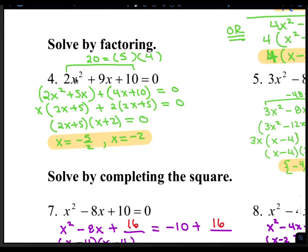Here's number 4. We're going to multiply A times C. We're solving by factoring. So 2 times 10 is 20. The two numbers that multiply to 20 but also add up to 9 is 5 and 4. So in the first group it'll be 2x squared plus 5x, and the second group would be 4x plus 10. Greatest common factor in the first group is x, leaving you with 2x plus 5. The greatest common factor in the second group is 2, leaving you with 2x plus 5. Then the final factoring is 2x plus 5 times x plus 2. Setting that equal to 0: if 2x plus 5 is 0, then x would be negative 5 over 2. And if x plus 2 is 0, then x would be negative 2.